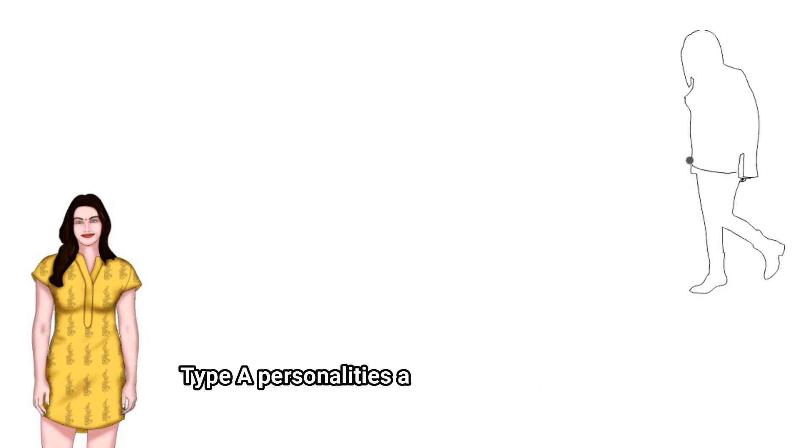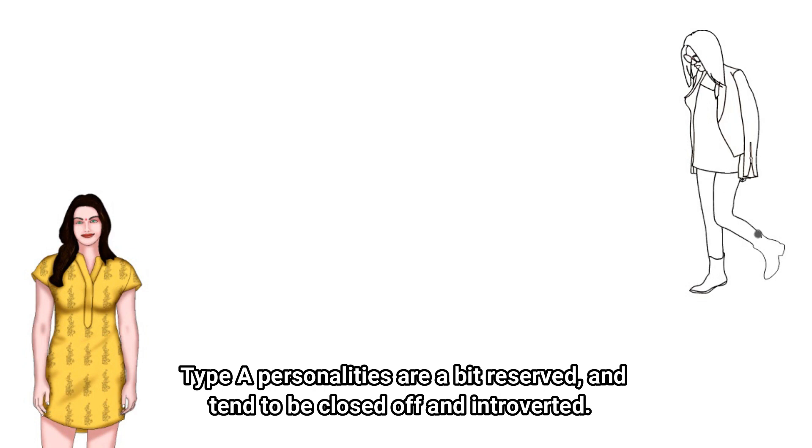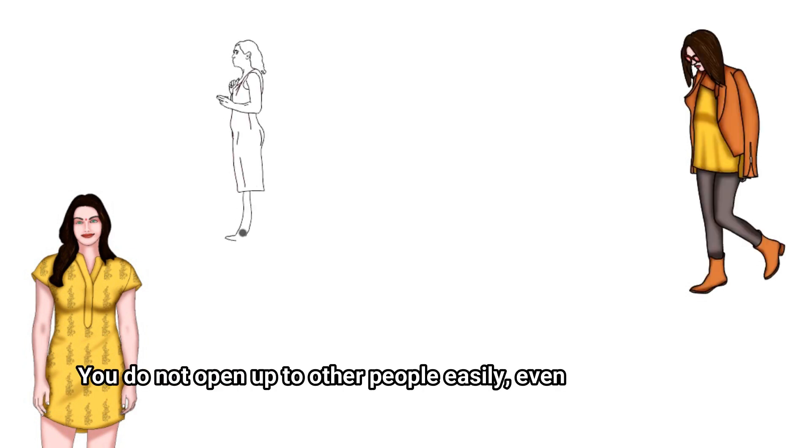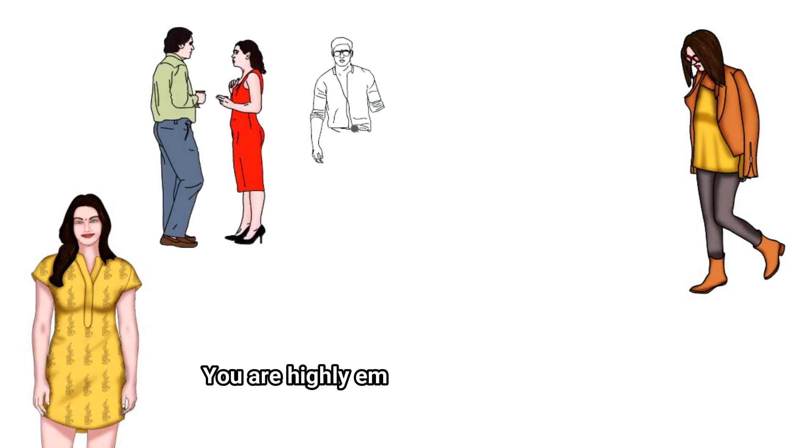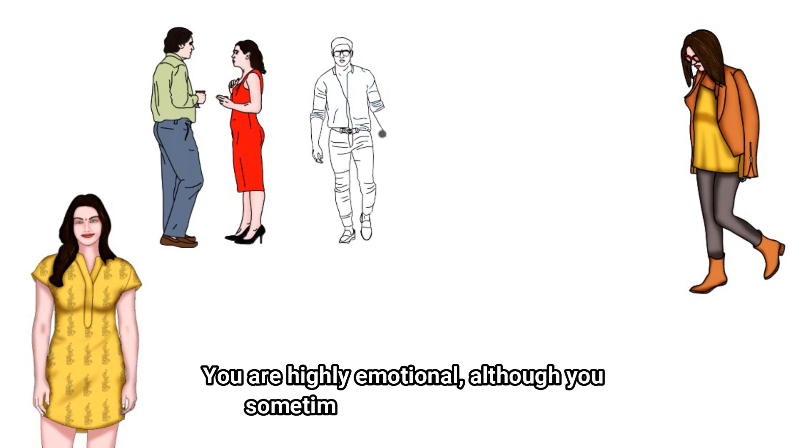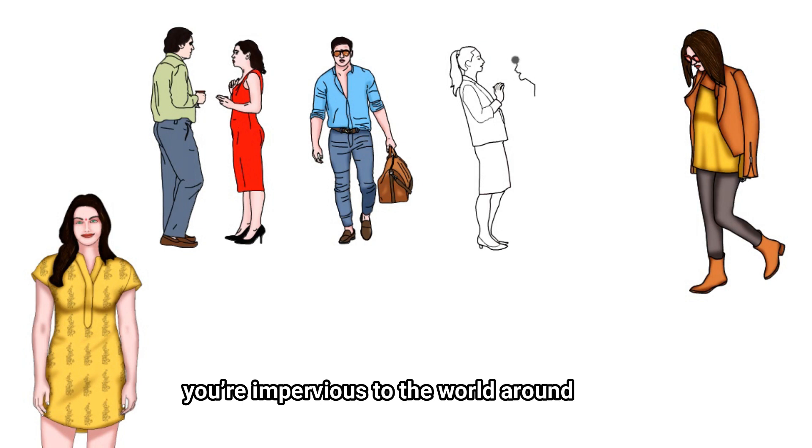Type A personalities are a bit reserved and tend to be closed off and introverted. You do not open up to other people easily, even with the people closest to you, and especially not to strangers. You are highly emotional, although you sometimes like to pretend that you are impervious to the world around you.